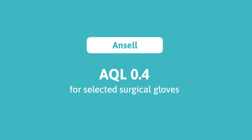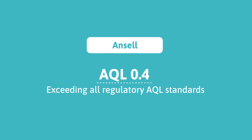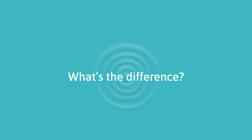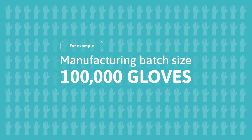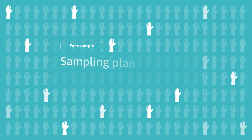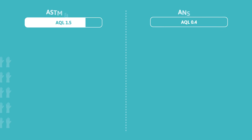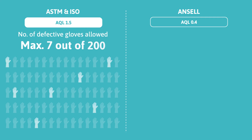Selected Ansell surgical gloves are now released to a lower AQL of 0.4, exceeding all regulatory AQL requirements. Let's take an example: for a manufacturing batch size of 100,000 gloves, the sampling plan requires 200 gloves to be randomly selected. When gloves are released to an AQL of 1.5, seven defective gloves out of 200 are acceptable and will potentially reach the OR.